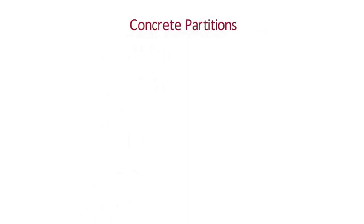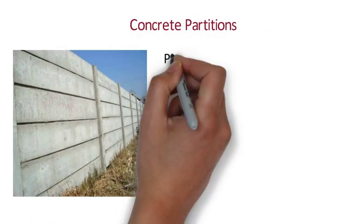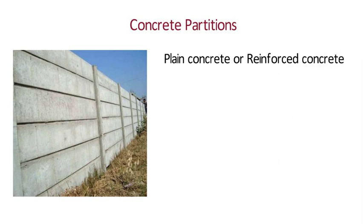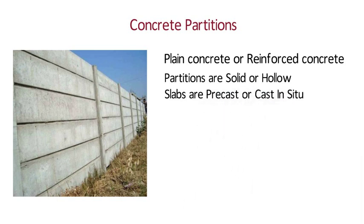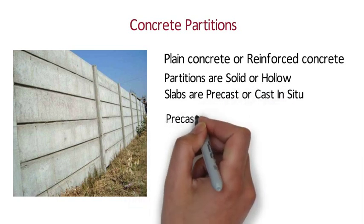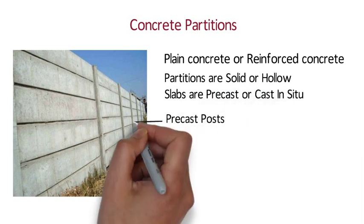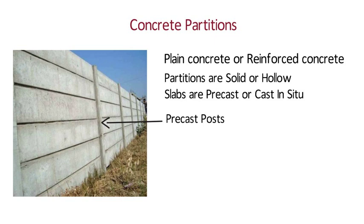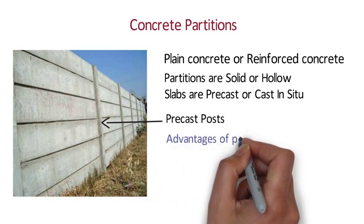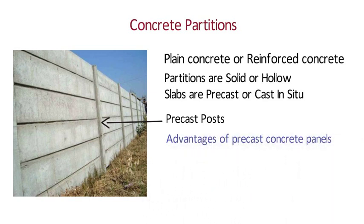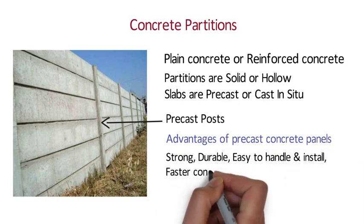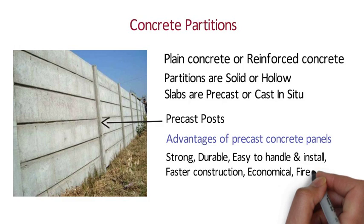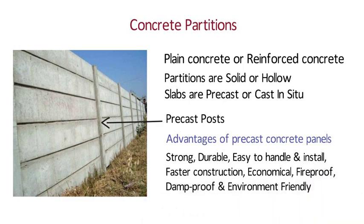Concrete Partitions: Concrete partition walls are made of plain concrete or reinforced concrete. Concrete partitions can be solid or hollow, and these slabs are either precast or cast in situ. Solid precast walls are made using precast posts that hold the slab in place, and the joints are secured with cement mortar. The advantages of precast concrete panels over cast in situ method are: they are strong, durable, easy to handle and install, faster construction, economical, fireproof, damp proof and environment friendly.